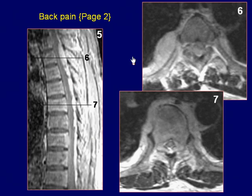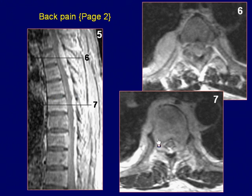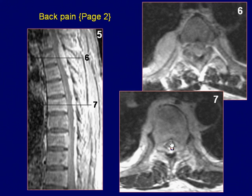These are sagittal and axial post-GAD fat saturation T1-weighted images of the thoracic spine, demonstrating abnormal paraspinal enhancing mass lesions associated with abnormal marrow lesions and epidural mass.